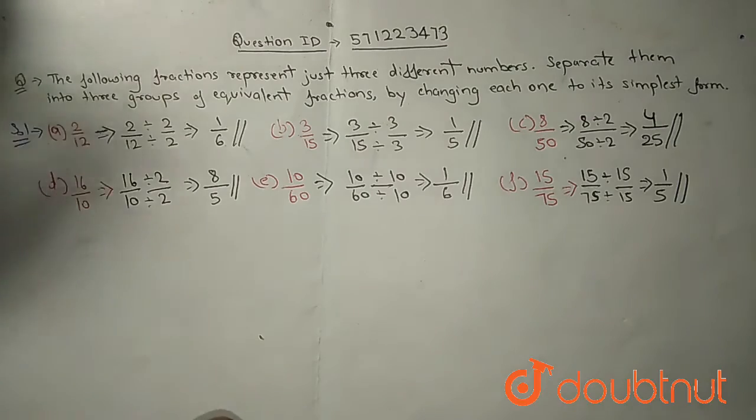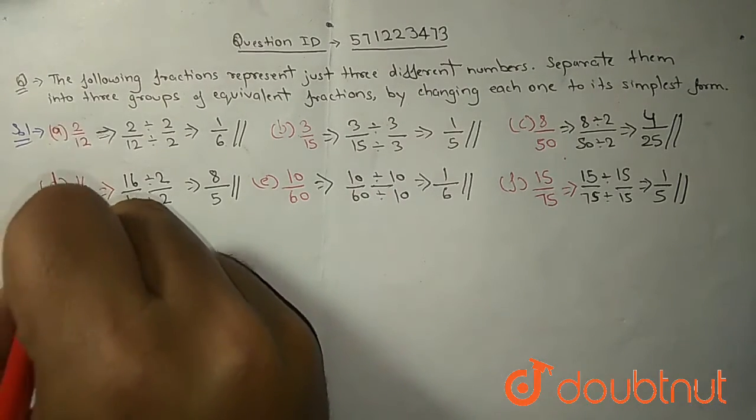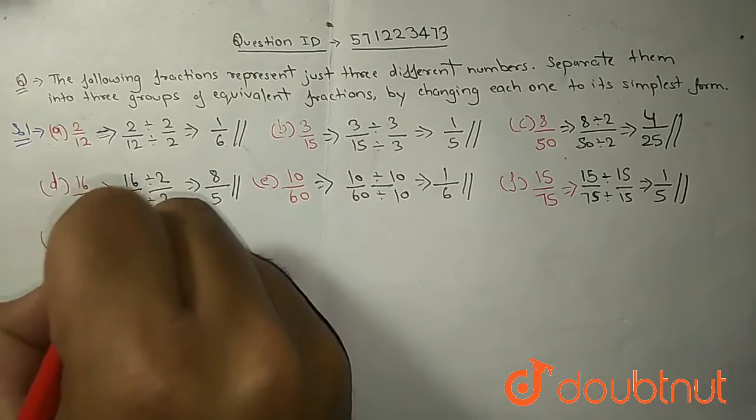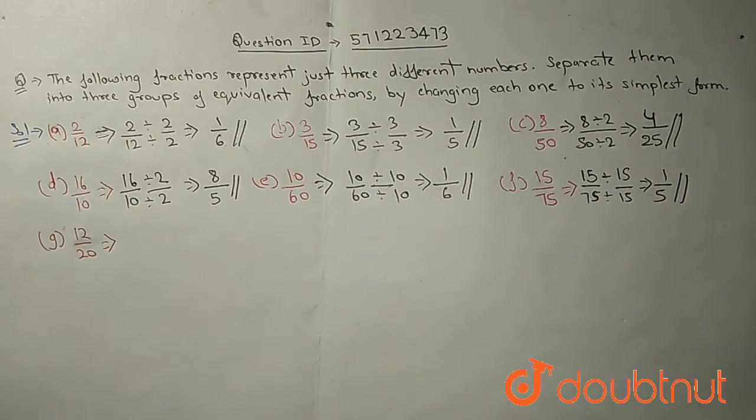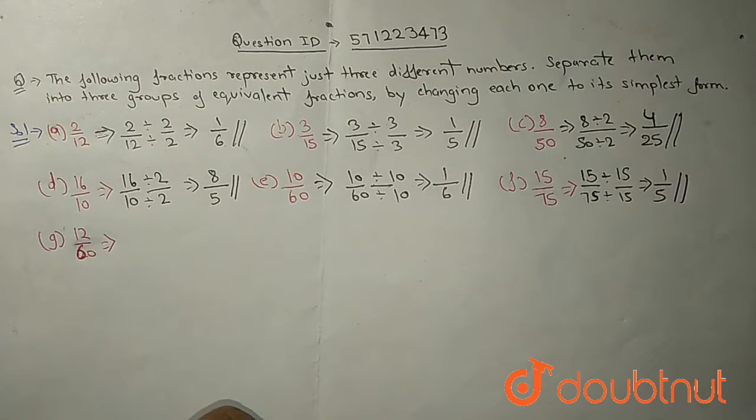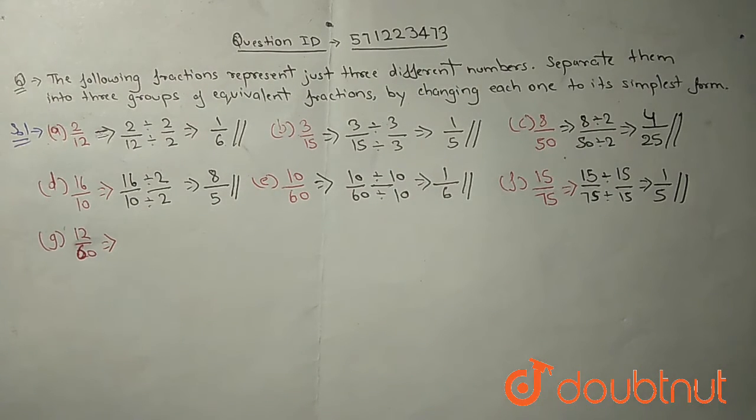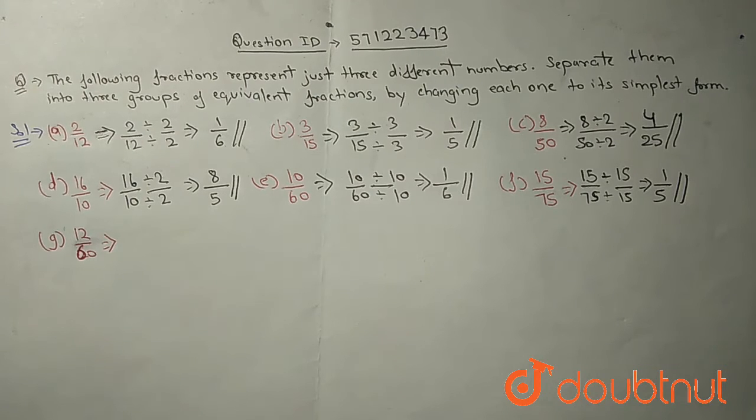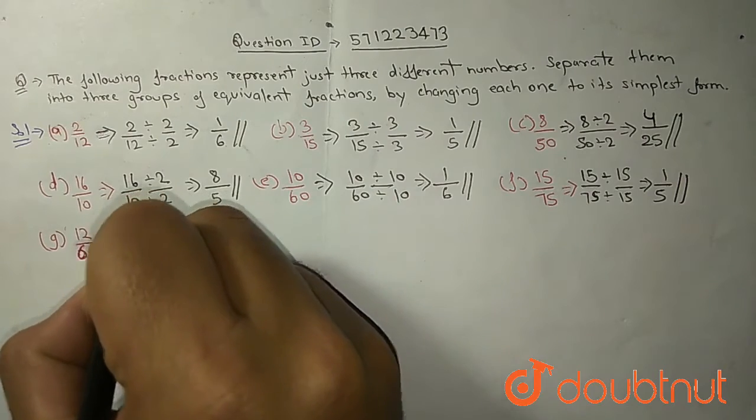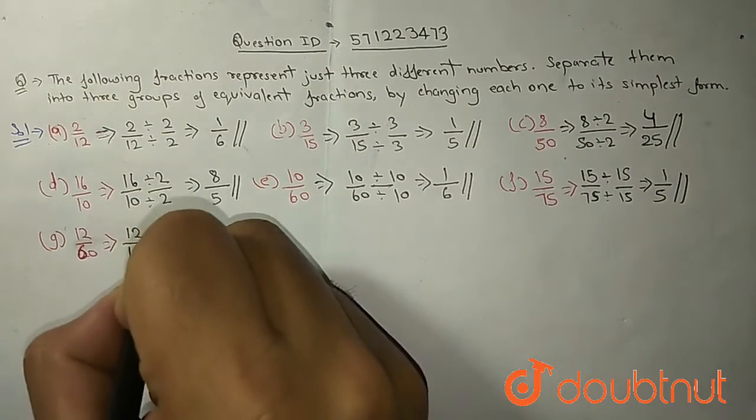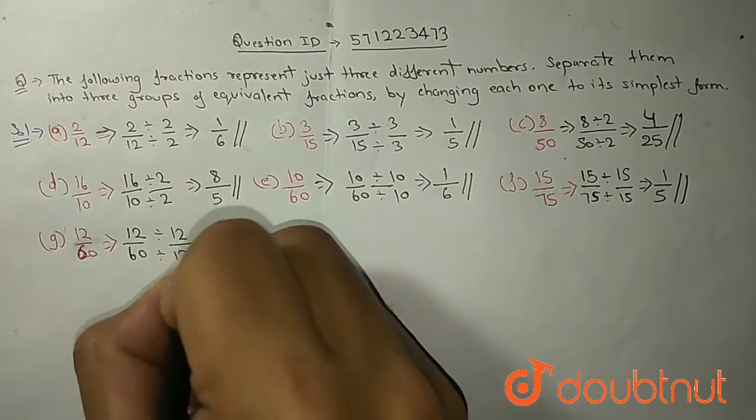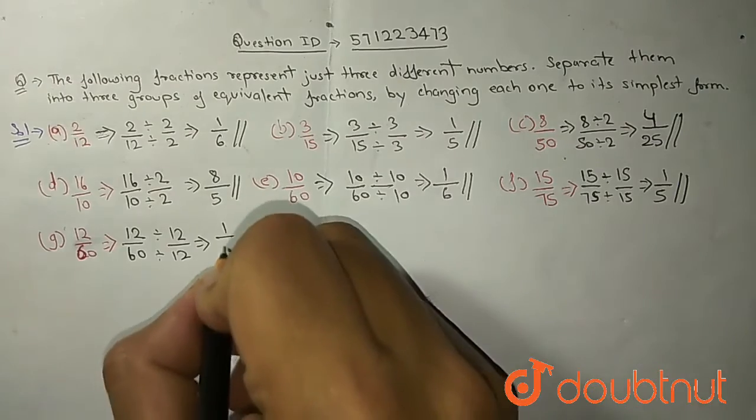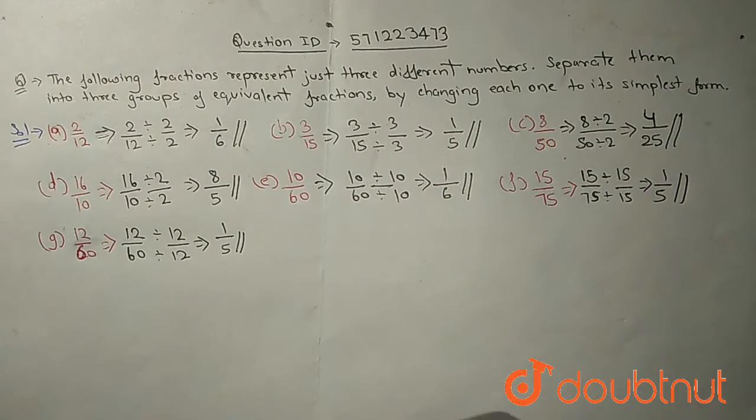Now G part. G part is 12 upon 60. Does 60 come in 12 table? Yes, obviously. At how many times? 12 times 5 is 60 and 12 also comes in 12 table. So we will divide by 12 on both sides, numerator and denominator. 60 divided by 12 in the denominator, 12 in the numerator, so we will get 1 upon 5.